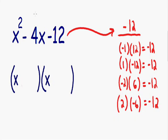So we need to place these two numbers, positive 2 and negative 6, on the right side of the parentheses. So once again, positive 2 multiplied by negative 6 gives us our negative 12.